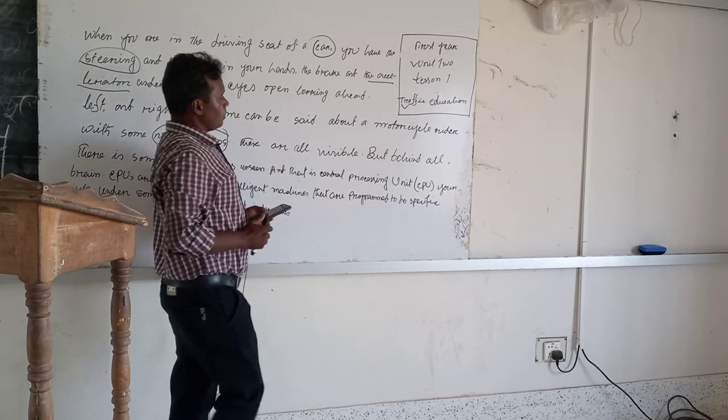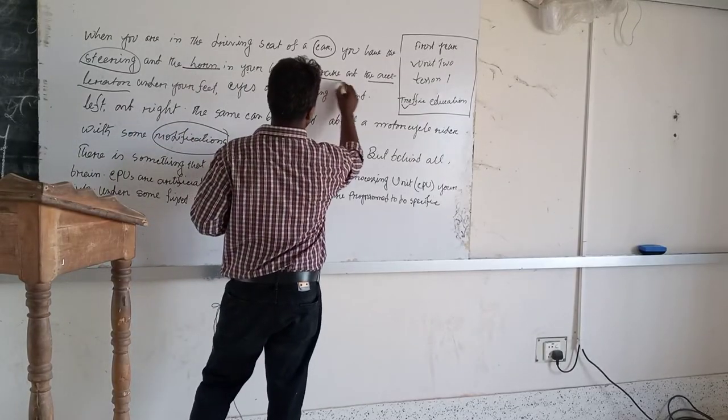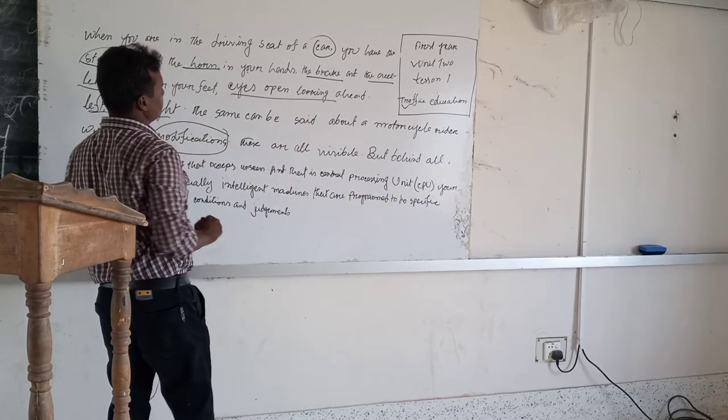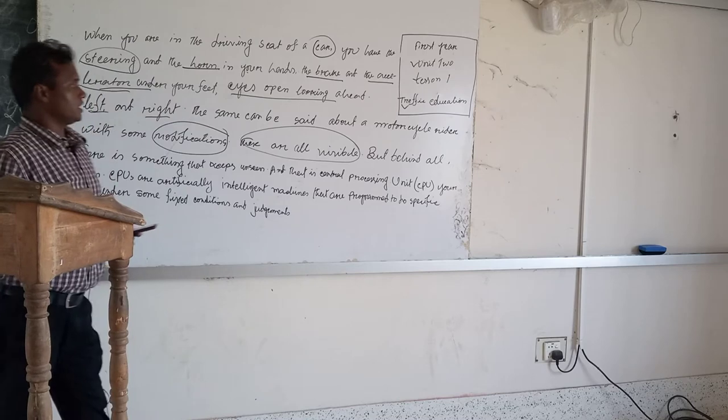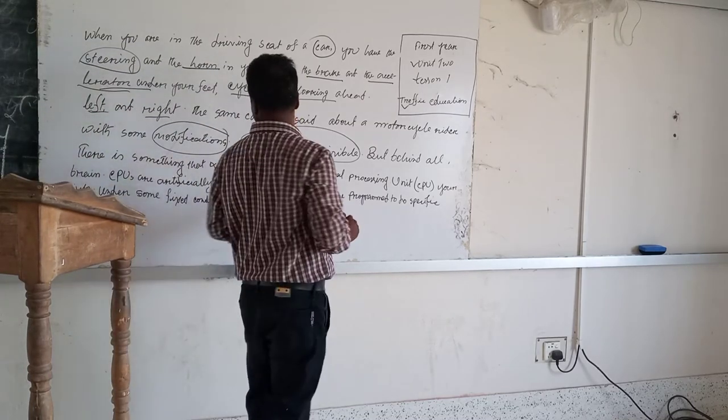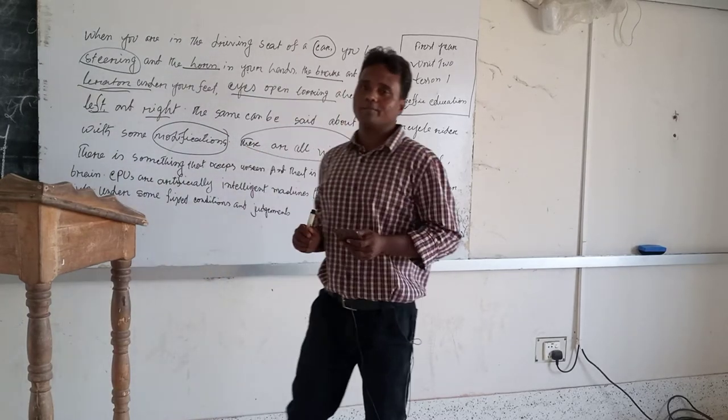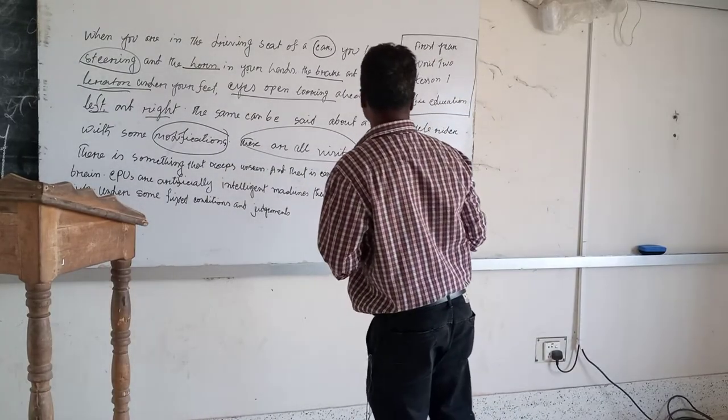These are all visible. But behind all, there is something that remains unseen. This is the central processing unit. The central processing unit is CPU.